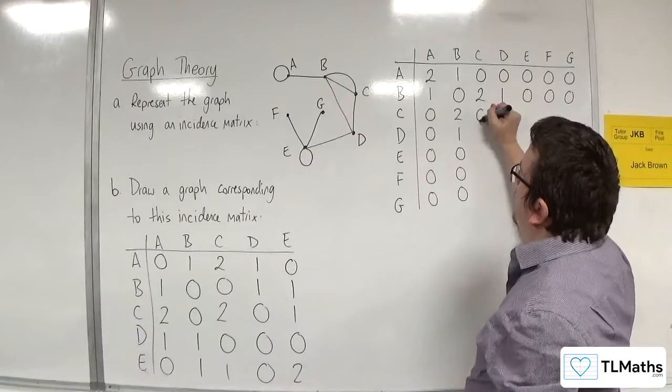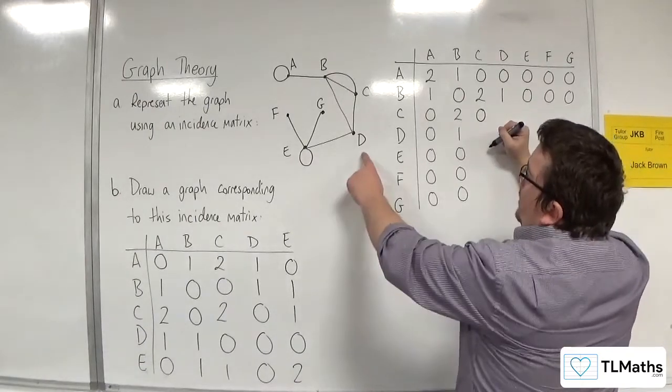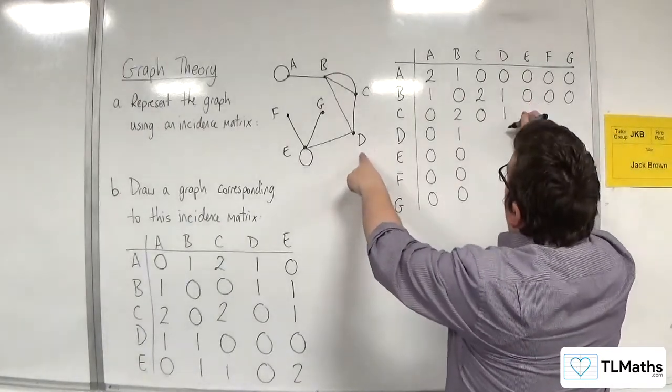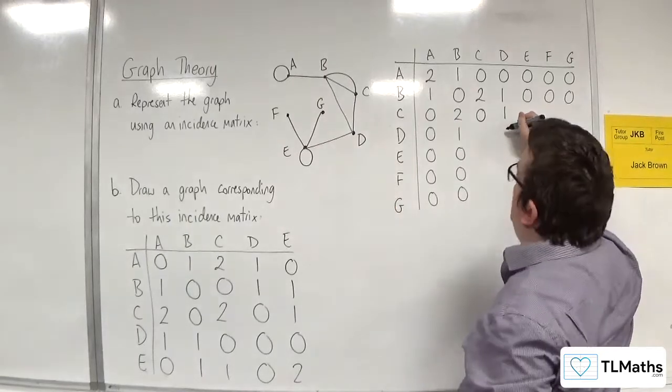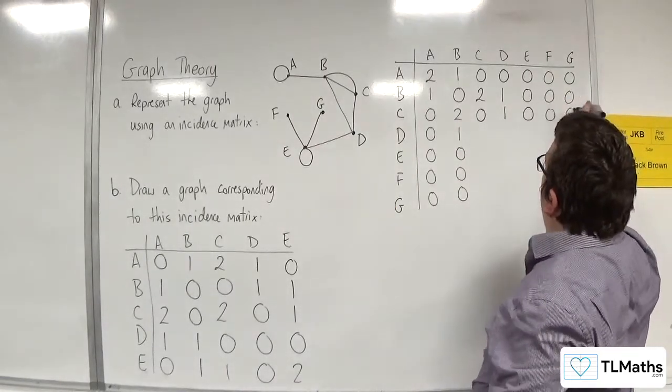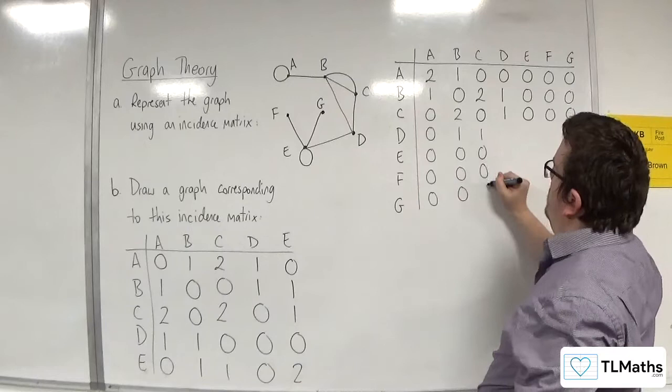C is not connected to itself. It is connected to D by one edge but not connected to E, F, or G. So 1, 0, 0, 0.